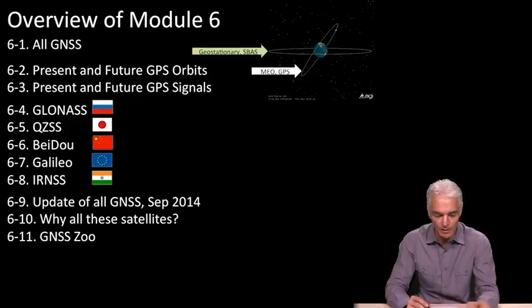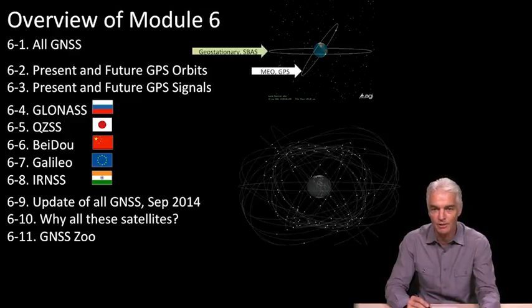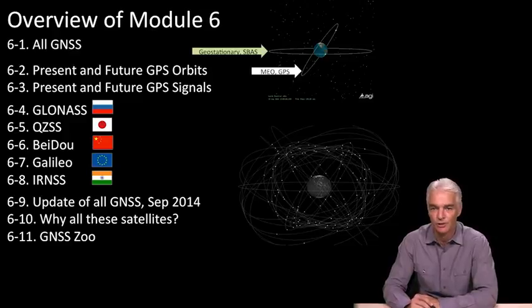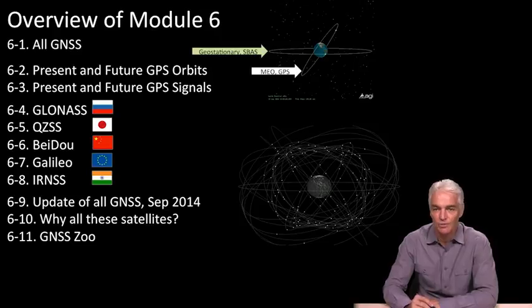Then we'll look into why we need all these satellites. When you look at how many are coming, you'll see a picture like that, just satellites galore. Well over 100 satellites are going to be providing us with navigation signals. Why do we need so many? We'll look into that.